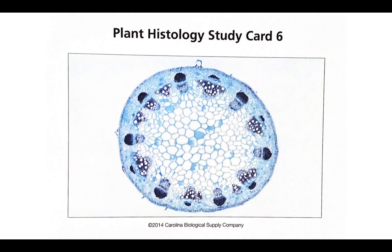In this one, this picture almost looks identical to the one from the book. If you can determine which part of the plant this is and then compare it to the picture and look at how the vascular bundles are arranged, that should help you identify it.